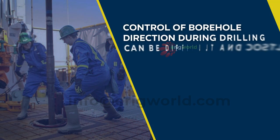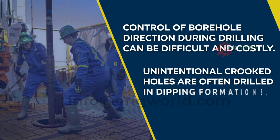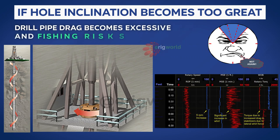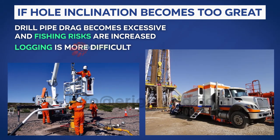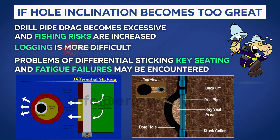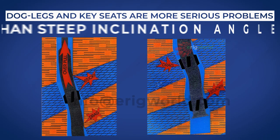Control of borehole direction during drilling can be difficult and costly. Unintentional crooked holes are often drilled in dipping formations. If hole inclination becomes too great, drill pipe drag becomes excessive and fishing risks are increased. Logging is more difficult and problems of differential sticking, key seating, and fatigue failures may be encountered. Dog legs and key seats are more serious problems than steep inclination angles.